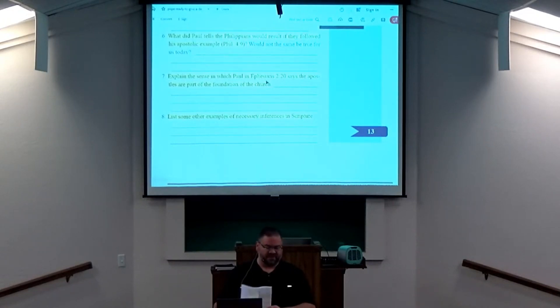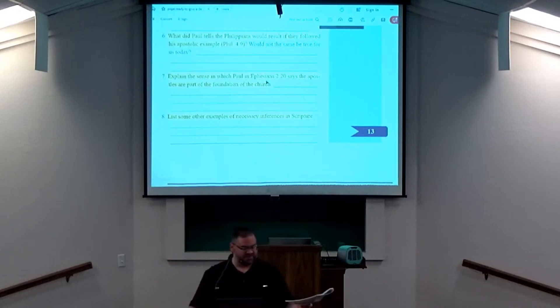Explain the sense in which Paul in Ephesians 2:20 says the apostles are part of the foundation of the church. Verse 20: having been built on the foundation of the apostles and the prophets, Jesus Christ himself being the chief cornerstone.